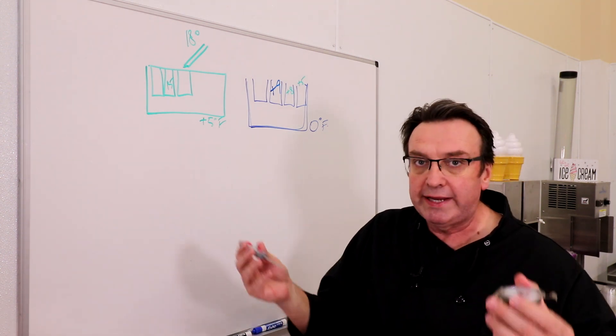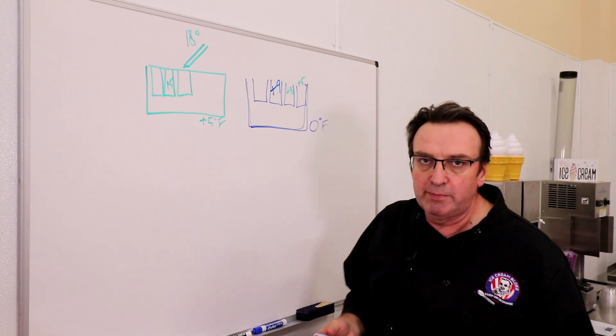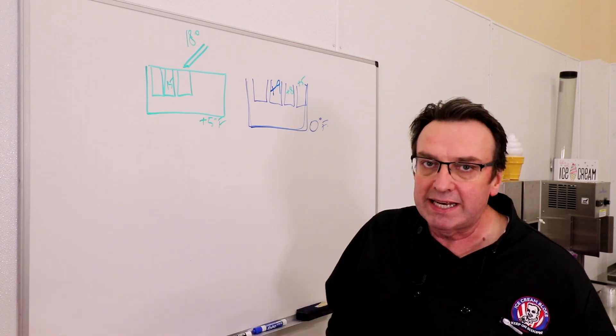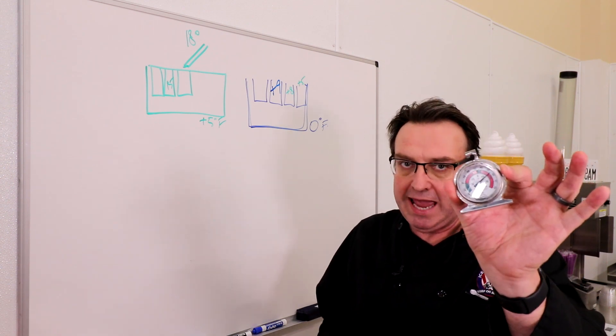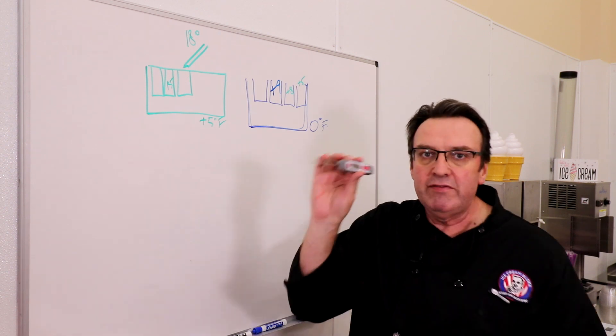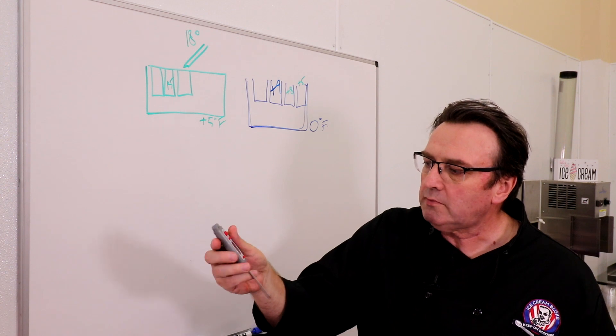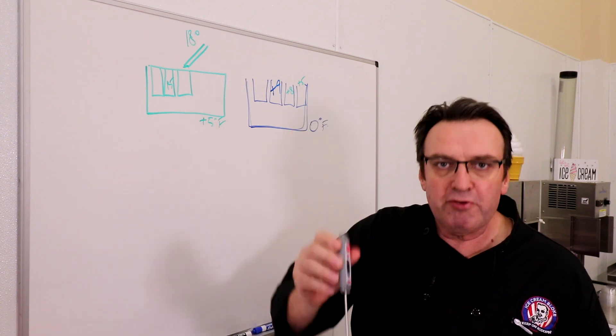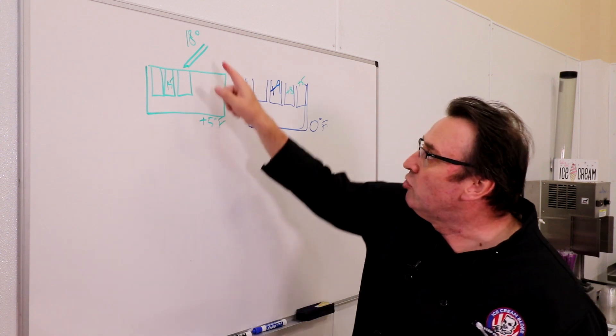So a couple of different thermometers that you'll need or gauges. This is important to know what your setting is at, not always visible on a dipping cabinet. You should try and make it a little bit more visible if you can. This should be somewhere in the dipping cabinet to confirm what this setting is. And every now and again, just pop one of these probe thermometers into your product to determine what exactly your product temperature is.